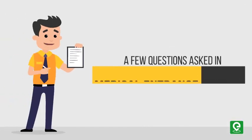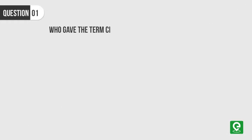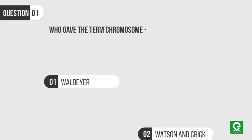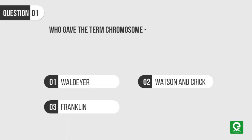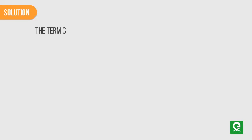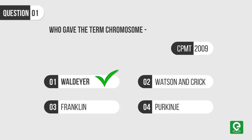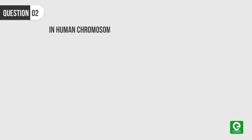Let's answer a few questions asked in medical entrance exams. Question one: Who gave the term chromosome? Options: Waldeyer, Watson and Crick, Franklin, or Purkinje. This question was asked in CPMT 2009. Solution: The term chromosome was given by Waldeyer in 1888. Hence option one is the correct answer.